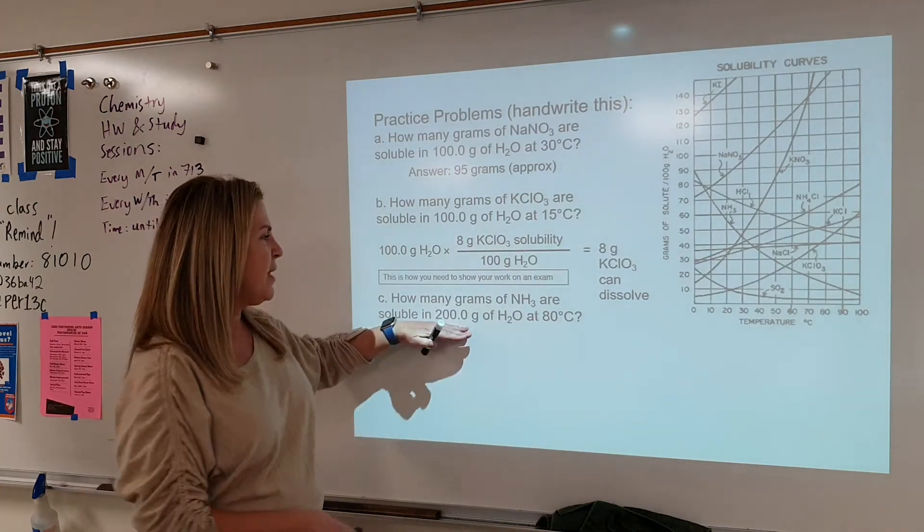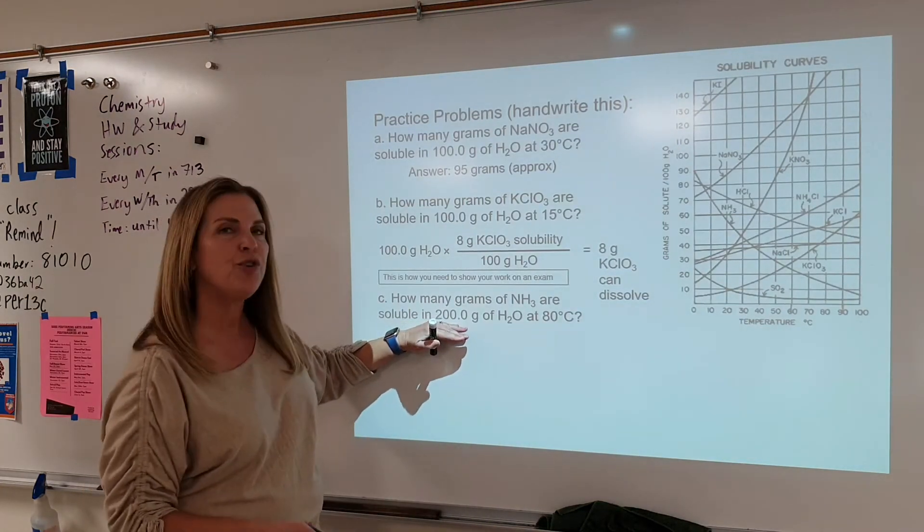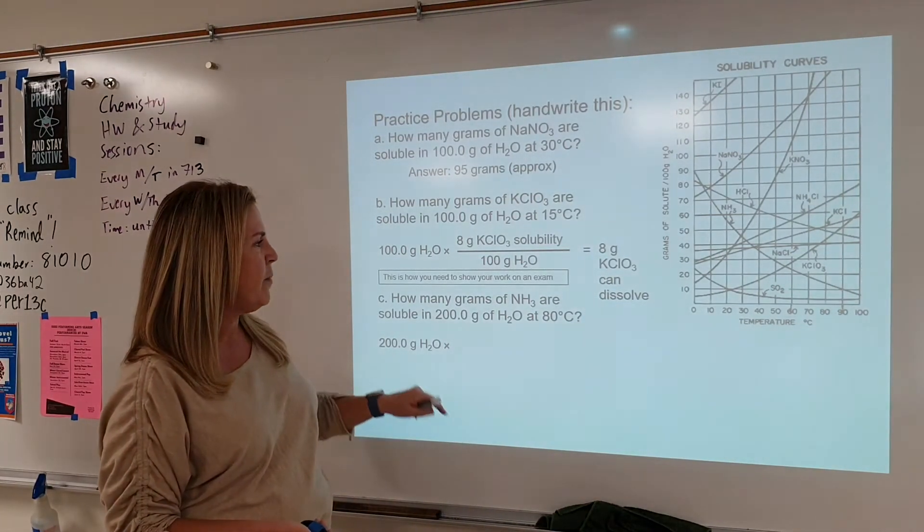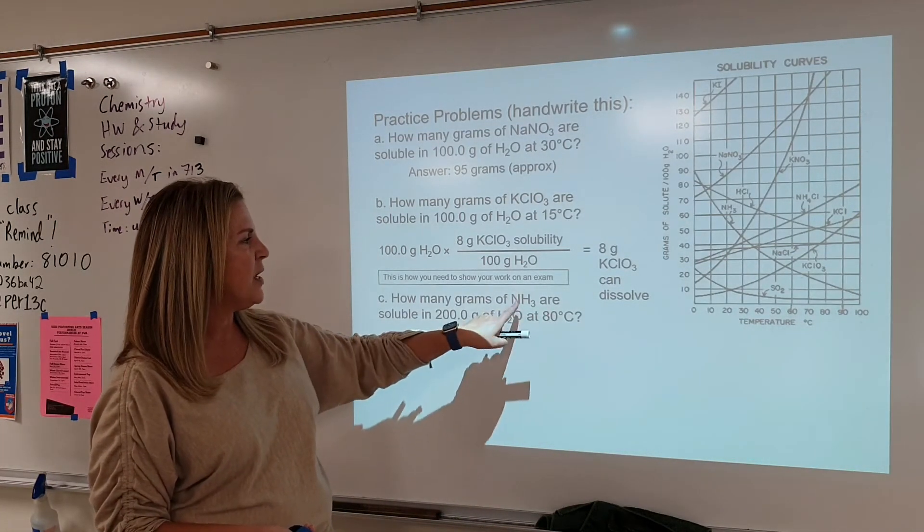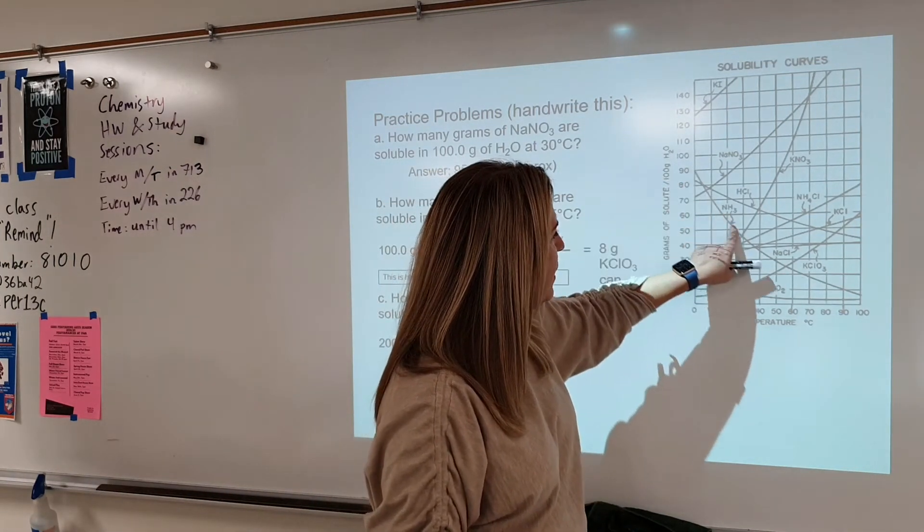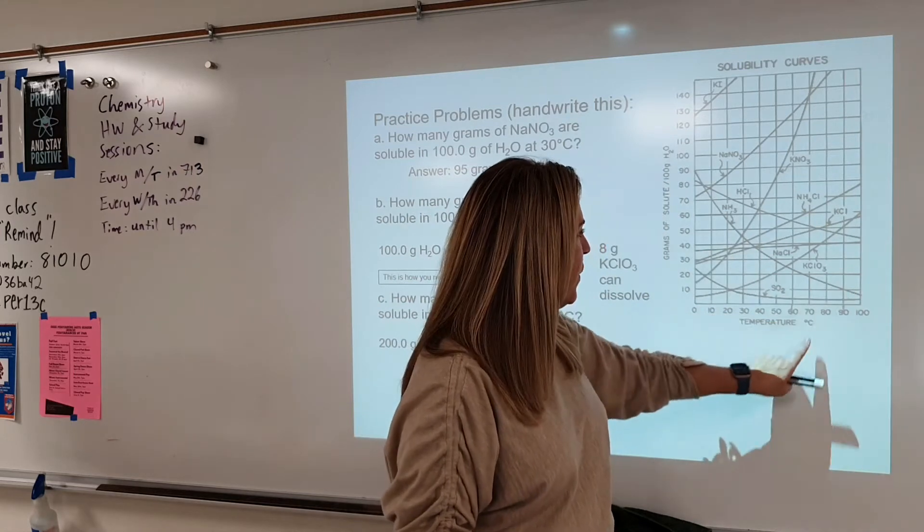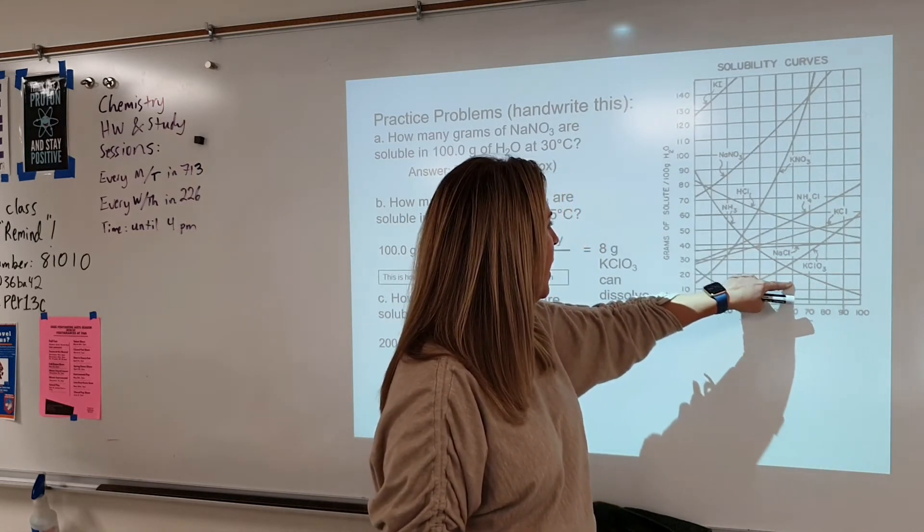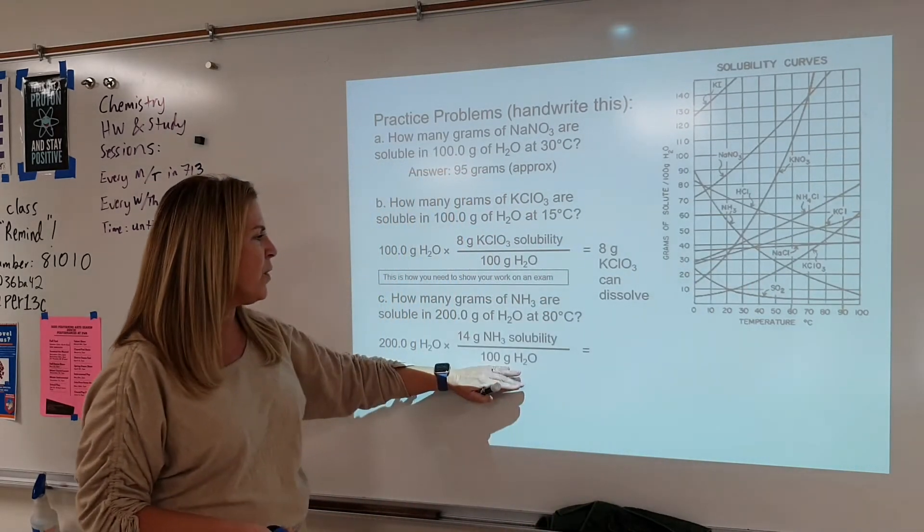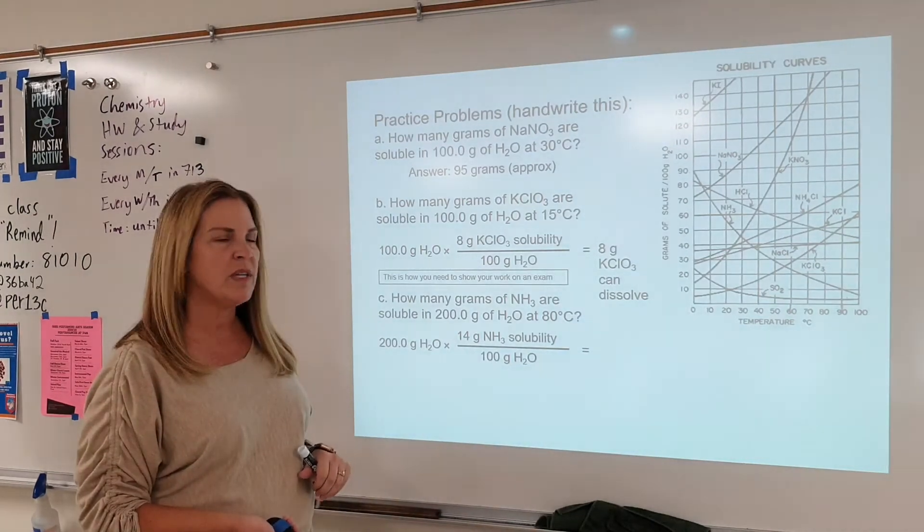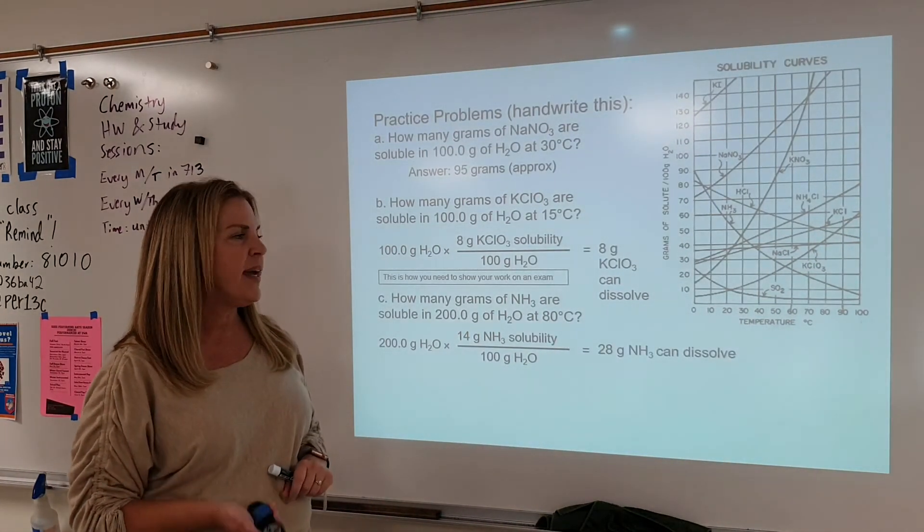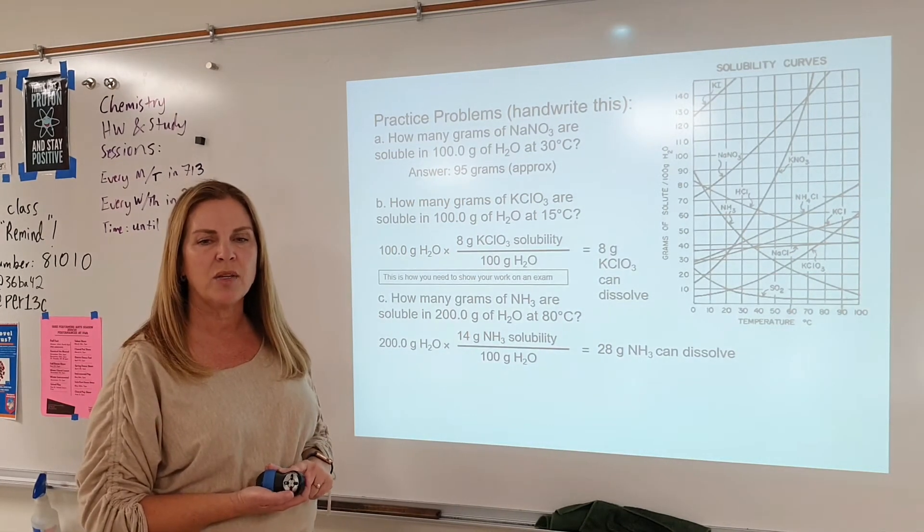Hopefully you recognize that this problem gave you 200 grams of water. So we're going to start with 200 grams of water this time. We're going to go to 80 degrees Celsius and our ammonia line. So here is our ammonia line. And so we're going to go to 80 degrees. We're going to come up where it hits. You're going to come across. And we're going to say for every 100 grams, there's approximately 14 grams of ammonia. And so the answer is going to be 28 grams of ammonia can dissolve.